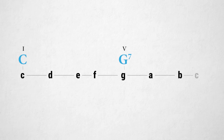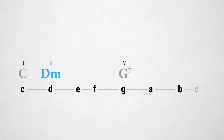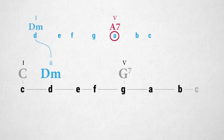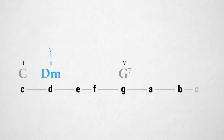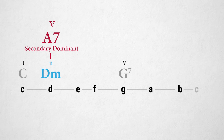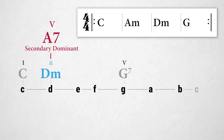In the D minor scale, the fifth degree is the note A, making A dominant seventh the primary dominant for D minor. But when D minor is not the tonic and just one of the other chords — like in the key of C major — then A dominant seventh is the secondary dominant for D minor. So instead of playing C, A minor, D minor, G, we now use the secondary dominant A dominant seven for D minor and play C, A dominant seven, D minor, G. In the key of C major, the A dominant seventh chord is the five of two.